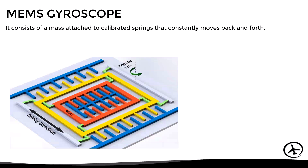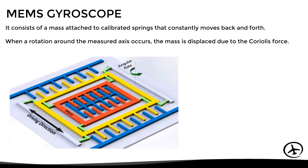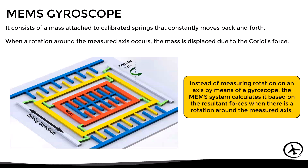A MEMS gyroscope consists of a mass attached to calibrated springs that constantly moves back and forth. When a rotation around the measured axis occurs, the mass is displaced to a side due to the Coriolis force. This displacement of the mass can be measured and the angular rate can be determined, just like when precession is measured in a conventional gyroscope. In essence, a MEMS gyro is not actually a real gyro, since instead of measuring rotation using gyroscopic principles, it calculates rotation based on the resultant forces when rotation occurs. However, it is called a gyro because the information it provides is essentially the same.